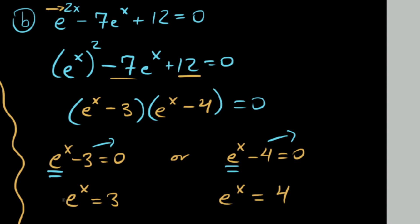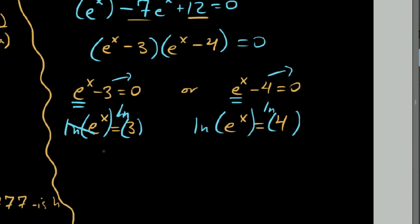And now to undo this exponential thing, we use a log, and we use the log with the same base. So log base e of e to the x is the same thing as log base e or ln of 3. In this case, over here on the right we'd say ln of e to the x is the same thing as ln of 4. So now on the left, ln of e to the x, those cancel, and we're left with just x on the left equal to ln of 3. And on the right here, we say ln and this e to the x, they have the same bases there and they're inverses, so we have x equals ln of 4.